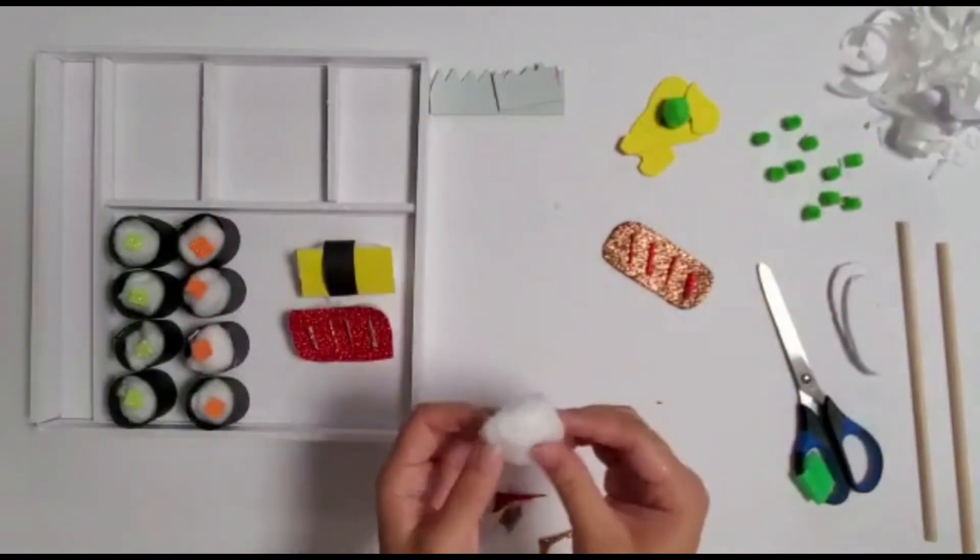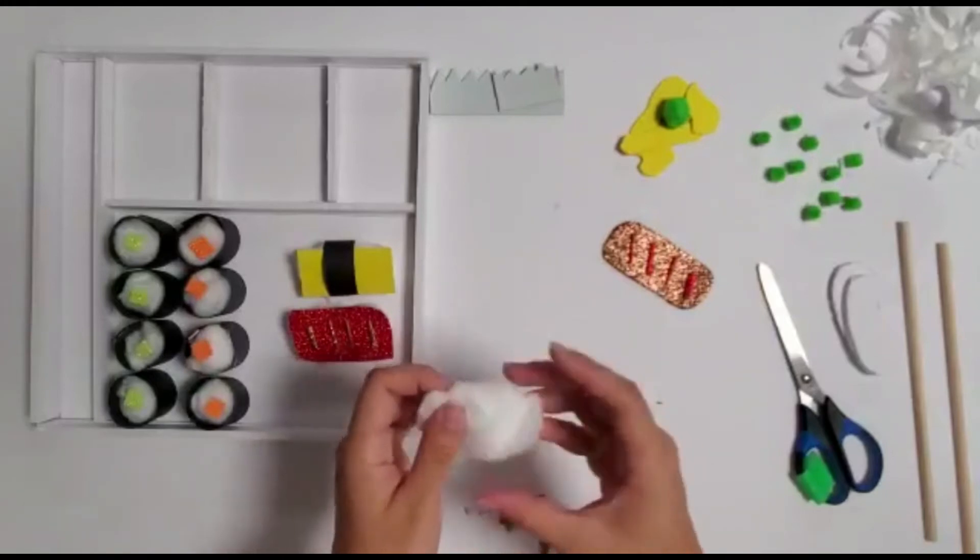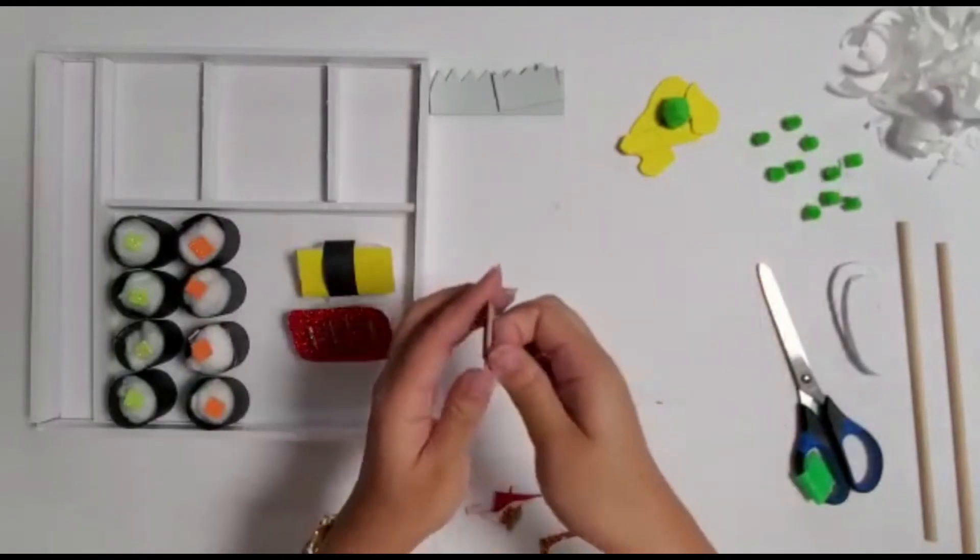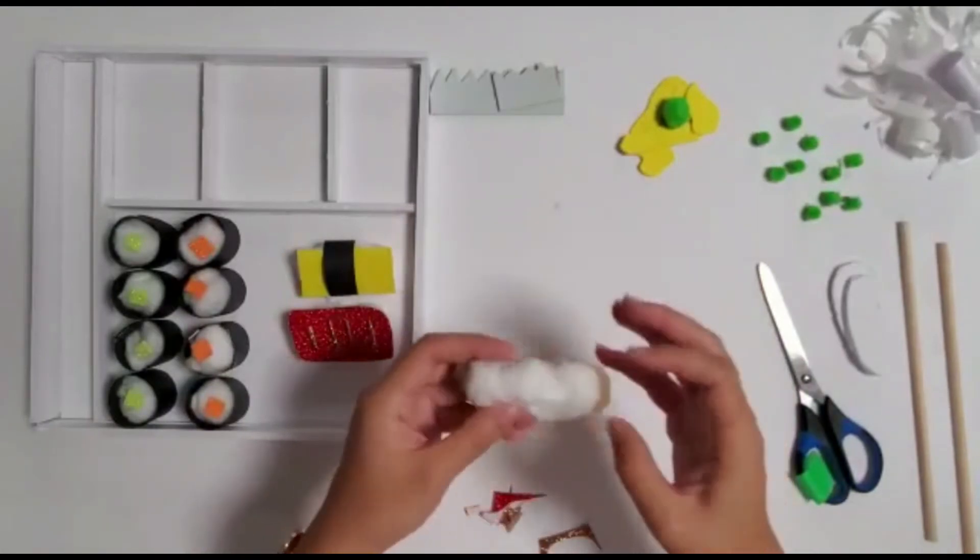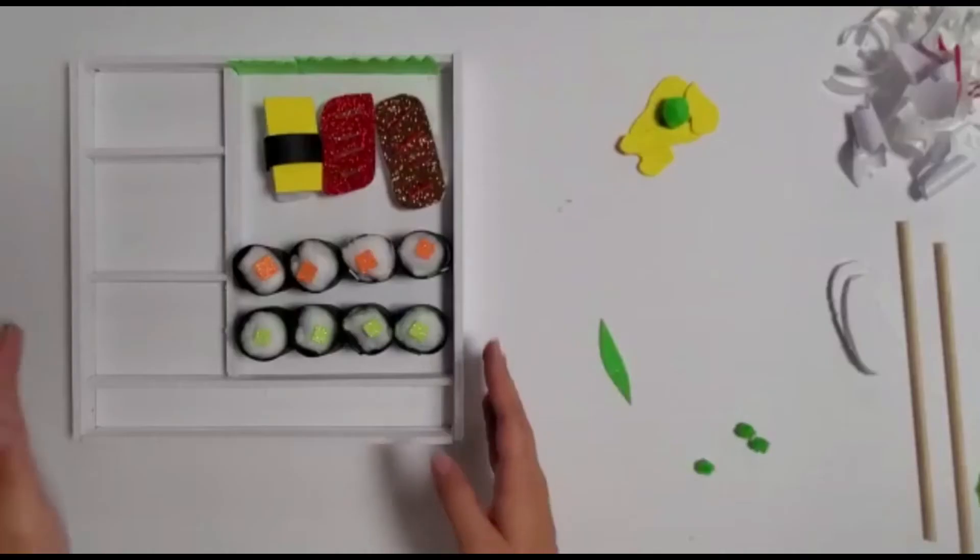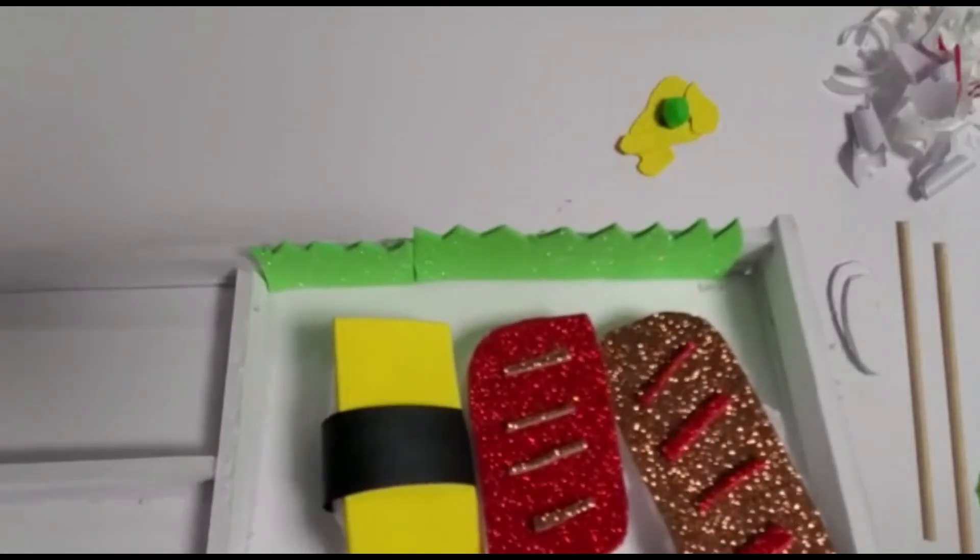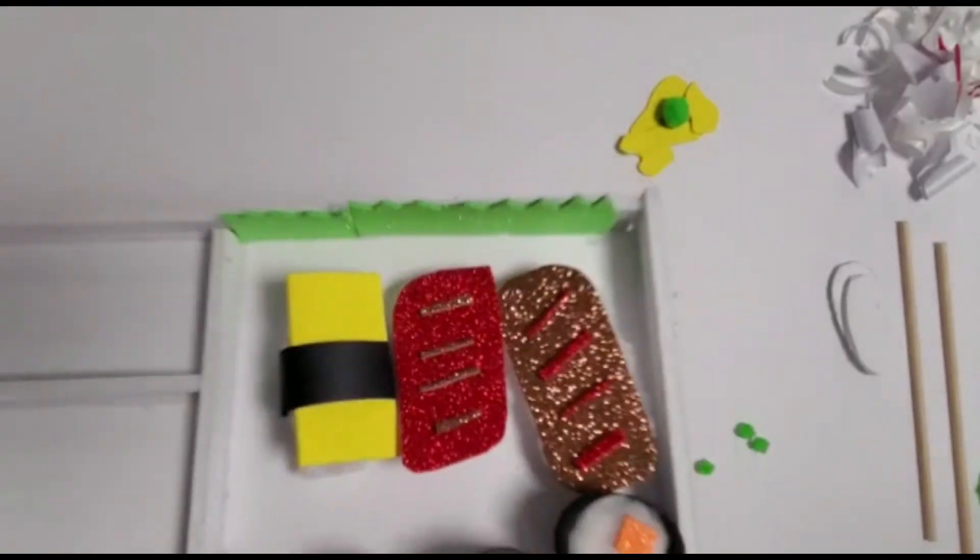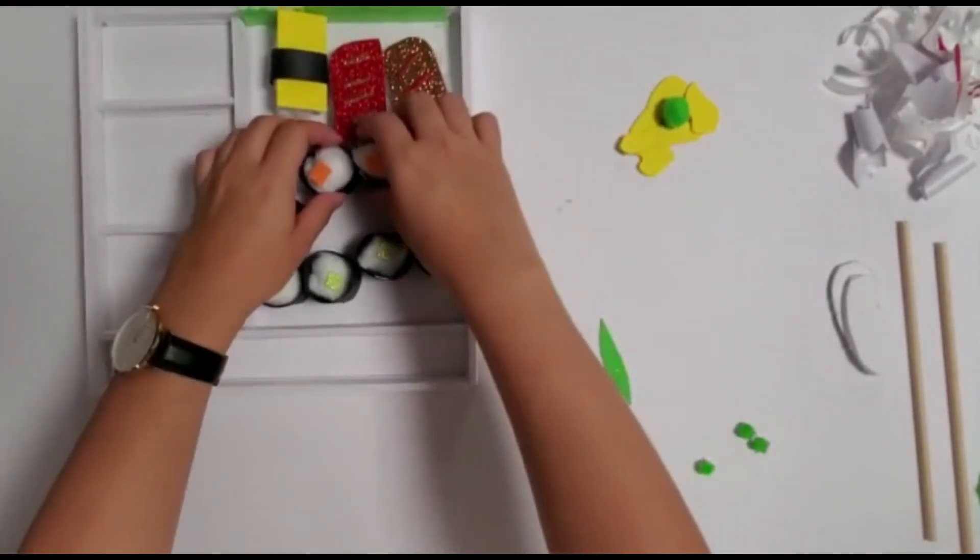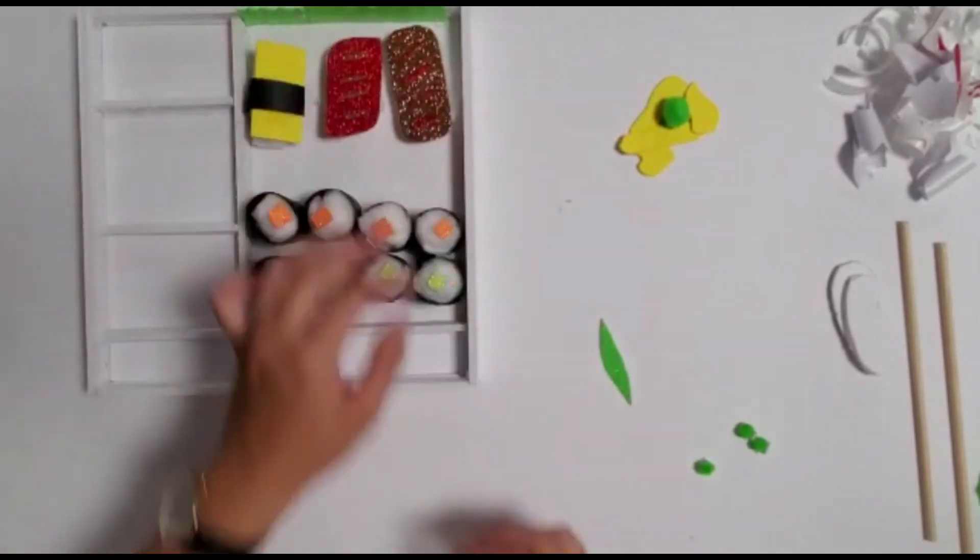When you're done, place the sushi into the bento box. Stick the squiggly piece of green glitter foam onto one side of the sushi section of the bento box. This is like seaweed decoration.